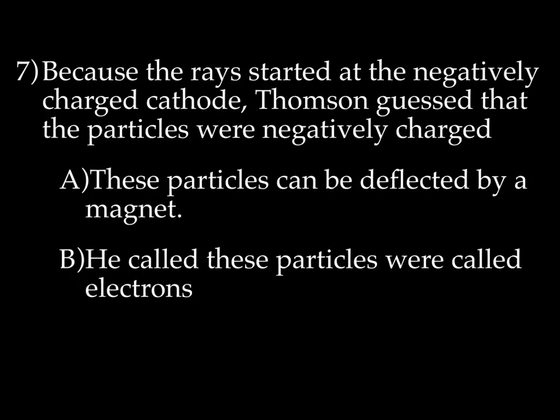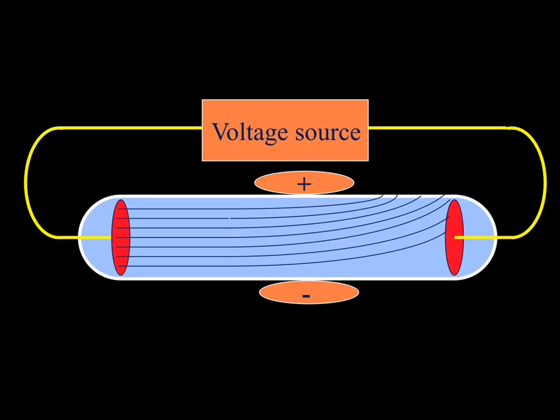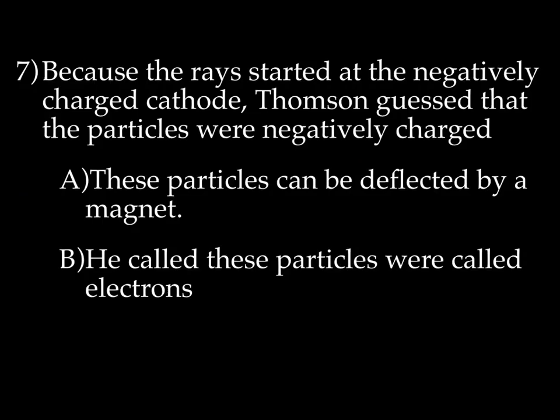Since he found out that that beam, that ray, was not a ray of light but a ray of particles, he tested further. He ran a magnet, the positive part of a magnet, along the glass tube, and what he saw was that this beam started moving towards the positive magnet. He then removed the positive magnet, and he put on a negative magnet, and the beam went away from the negative magnet. Negative charges don't like other negative charges, but negative charges like positive charges.